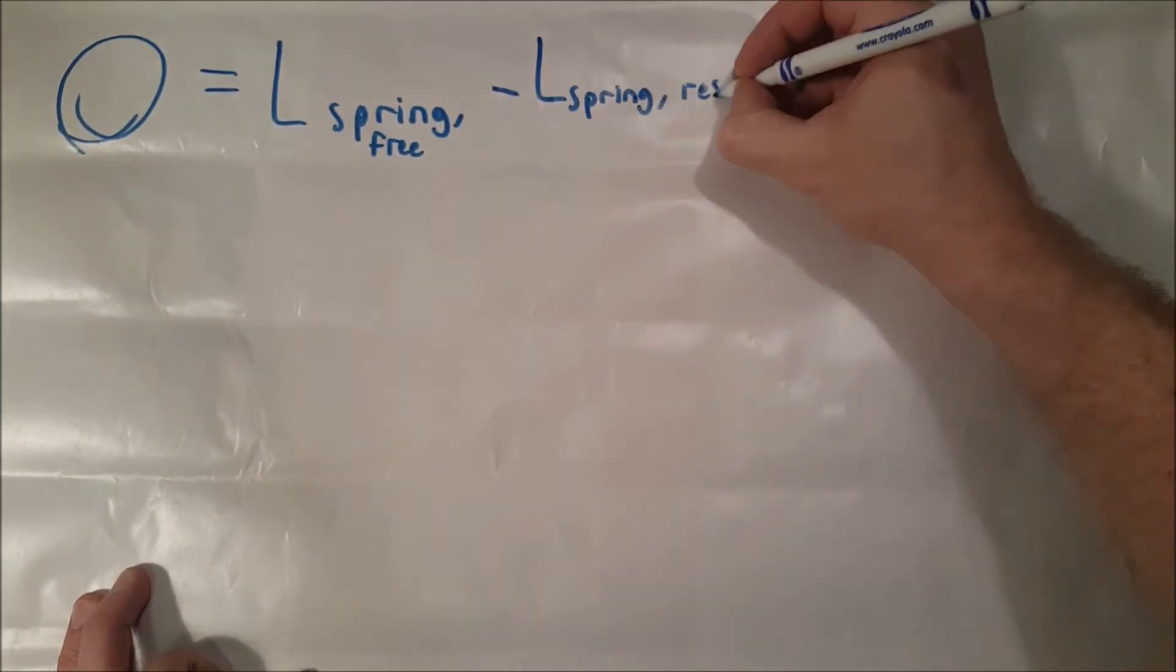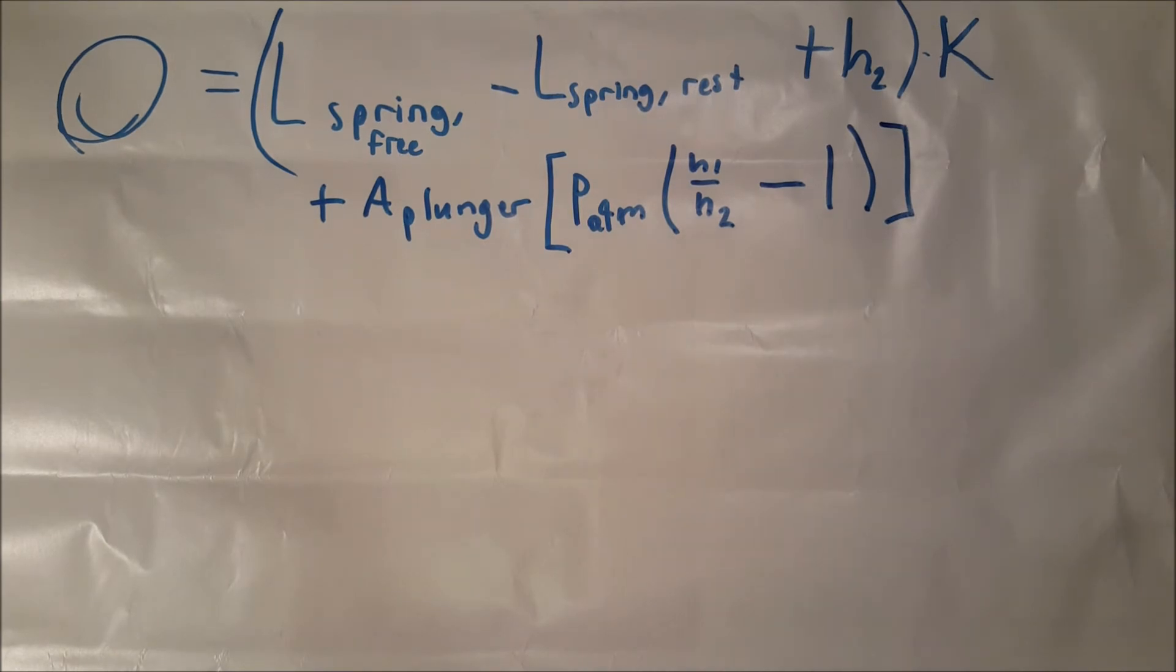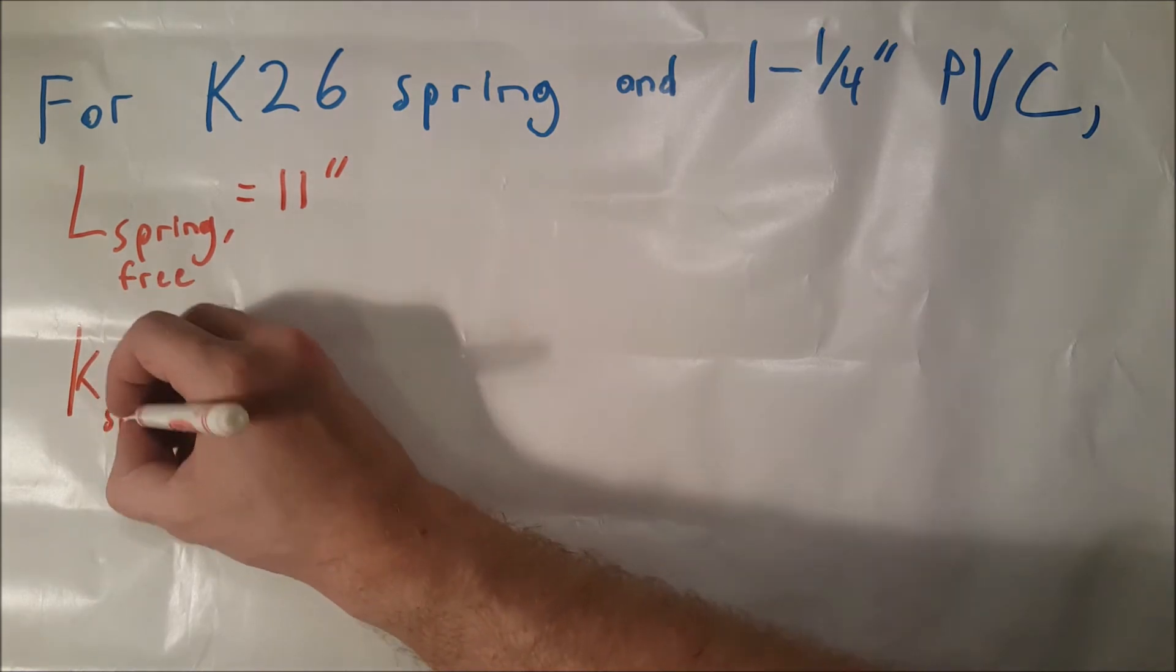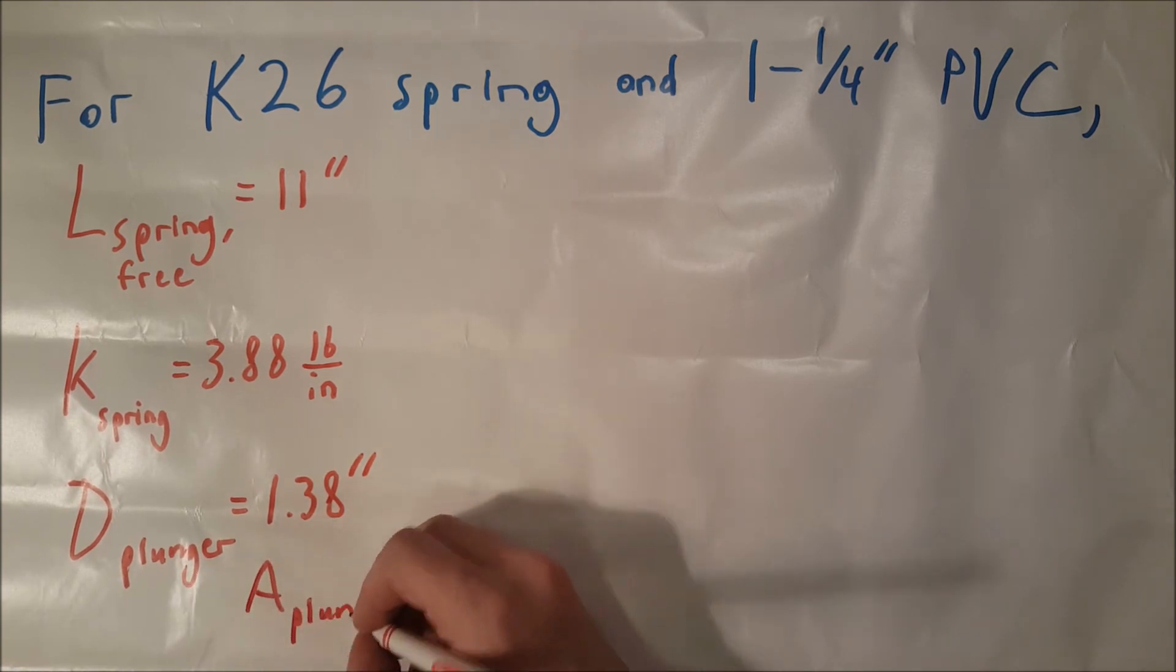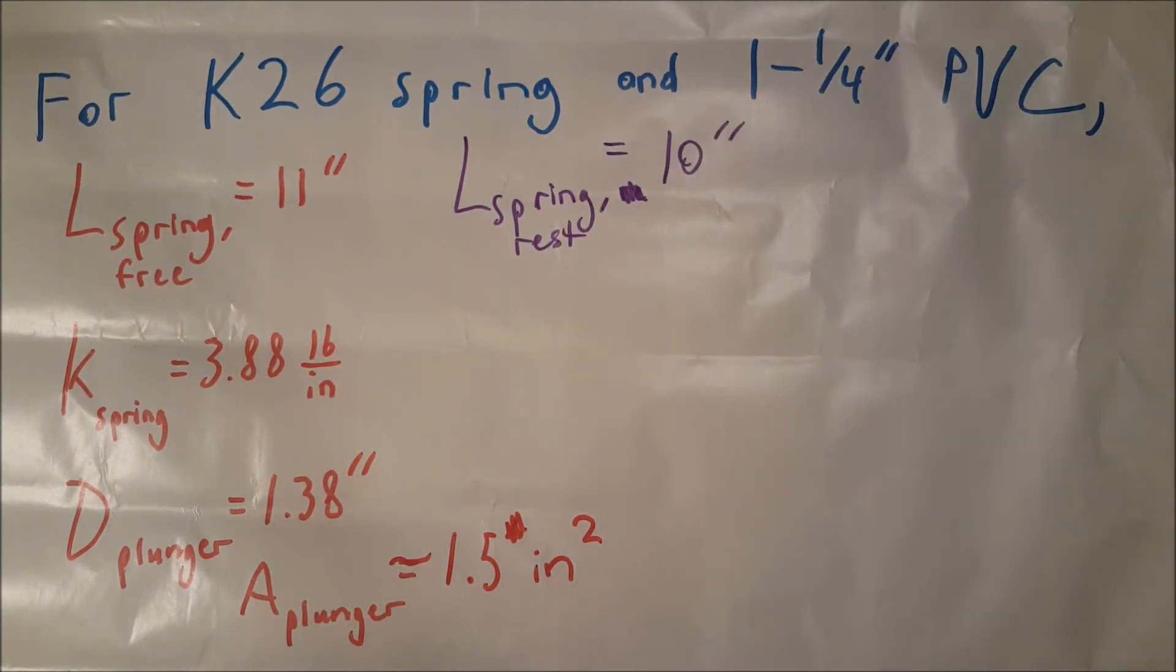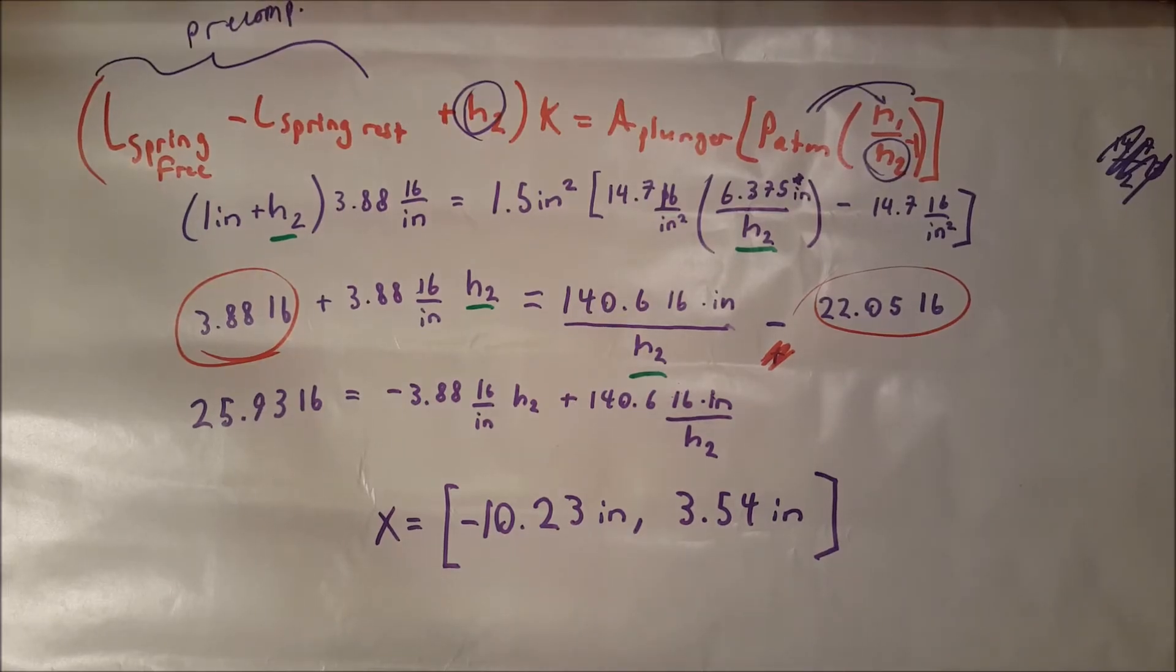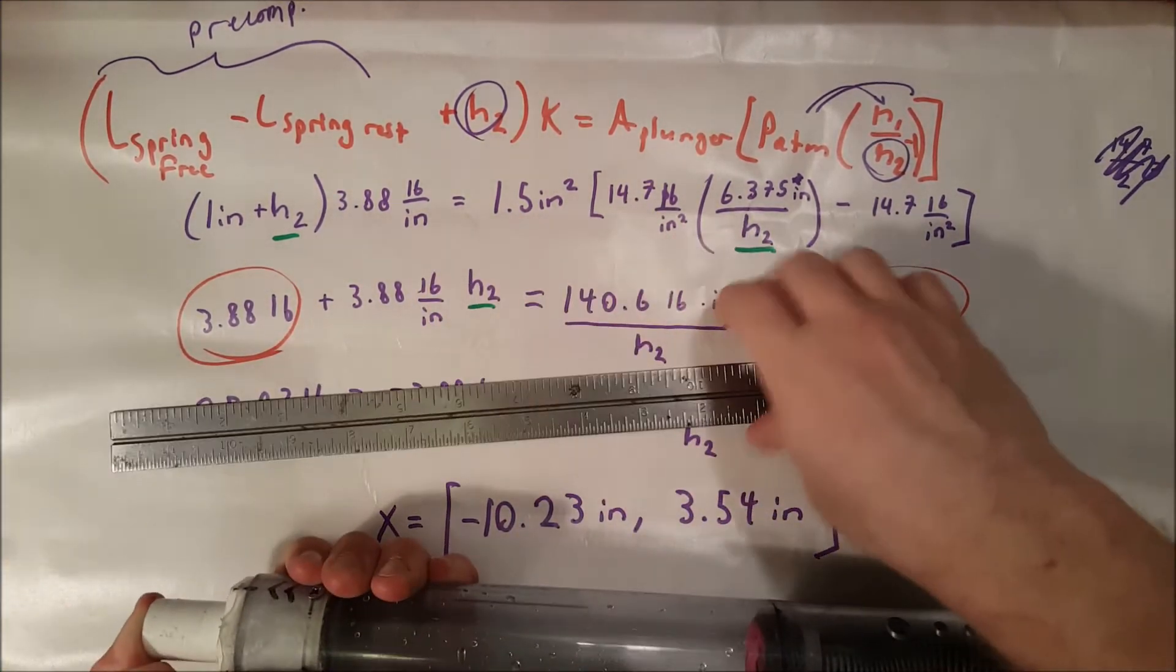So this is the force balance here now. If we say that the force is zero, that's the point where the piston stops, where there's no acceleration. H₂ is what we're trying to find—where does the piston stop? For a K26 spring and one-quarter inch PVC, we have a couple of known constants. I'm taking these measurements directly from my blaster or from online sources that have the diameter of PVC and some spring constants. This would also be a decent way of testing your spring constant if you don't know what it is. You just measure where the spring stops and plug it into that equation I just gave you.